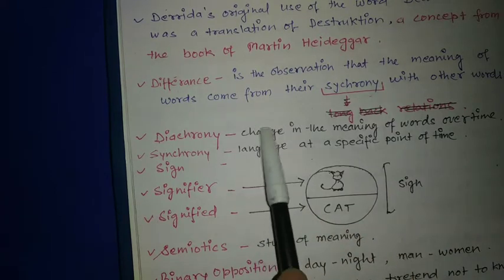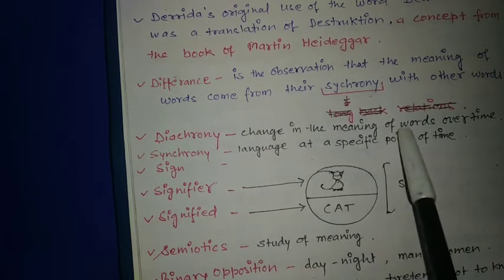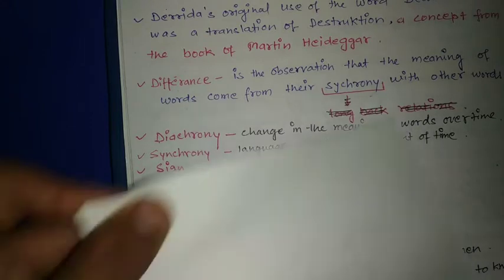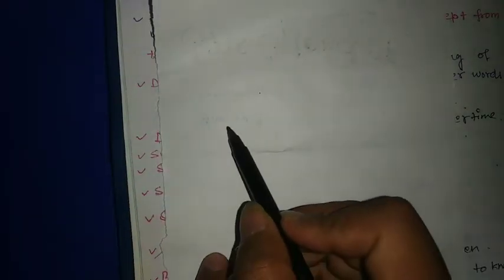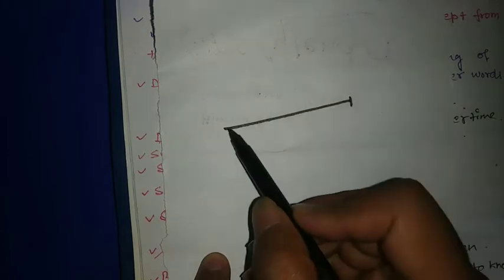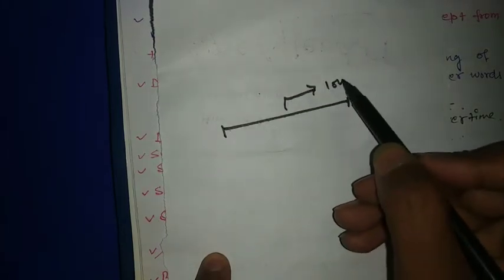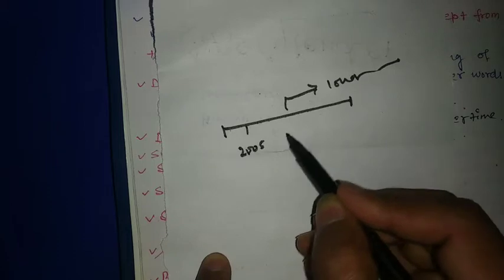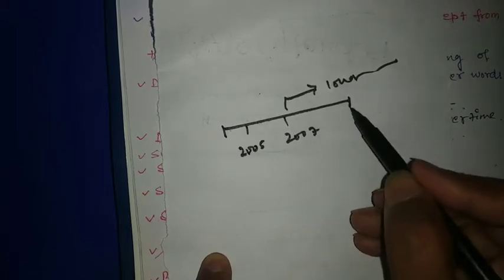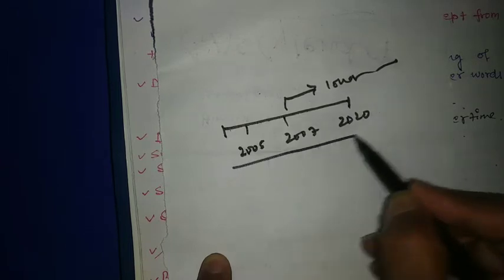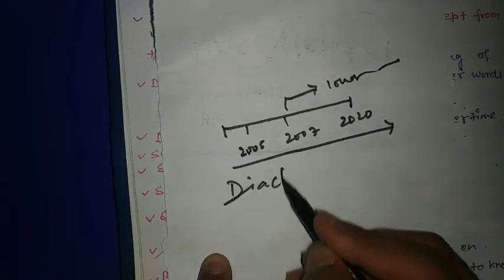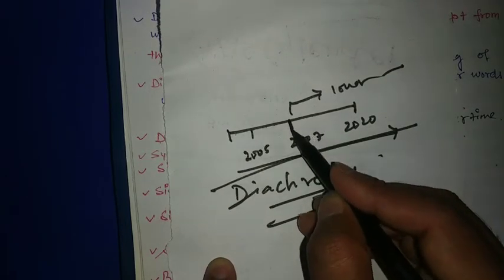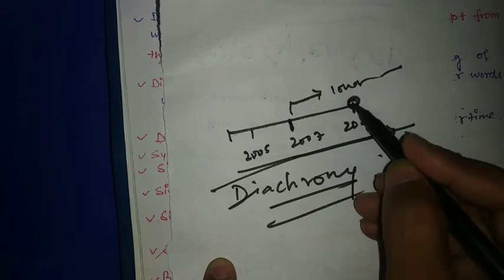Synchrony and diachrony are both study of language. Diachrony is studying the change in the meaning of words over time. If you are studying a language for a long time, what was the language in 2005, then in 2007, and in 2020, this relationship is called diachrony. If I am just taking the language at a point, again 2020, and then studying language, it is called synchrony.